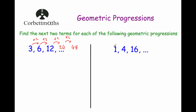In this next sequence you might just spot that we are multiplying by 4, because 1 times 4 is 4, and 4 times 4 is 16. Or if you're not sure, divide any term by the term before it — 4 divided by 1 is 4, and 16 divided by 4 is 4. As long as you choose two consecutive terms, dividing will always give the common ratio. So multiplying by 4: 16 times 4 is 64, and 64 times 4 is 256.